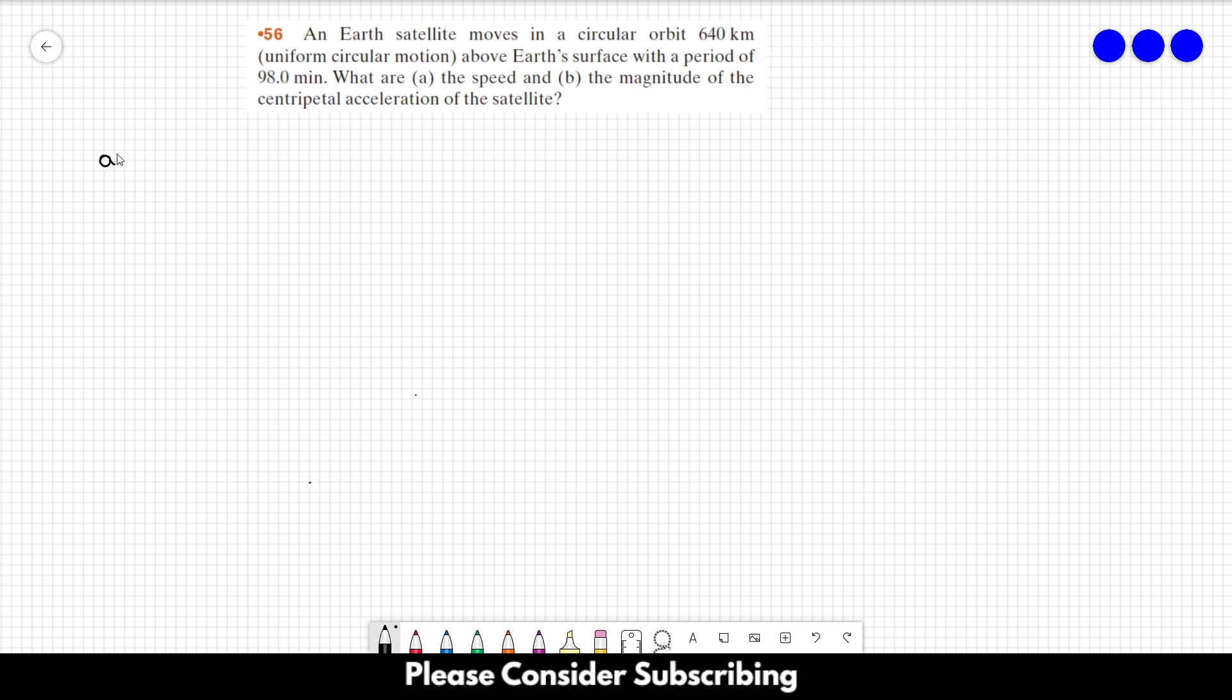For letter A, we want the speed of the satellite, and we know that the period of the movement is equal to 2 times pi times the radius of the movement over its speed. So the only thing that we have to do is isolate the speed. The speed of the satellite is equal to 2 pi times the radius of the movement over its period. So that's the equation that we have to solve. We need the radius of the movement and the period of the movement as well.